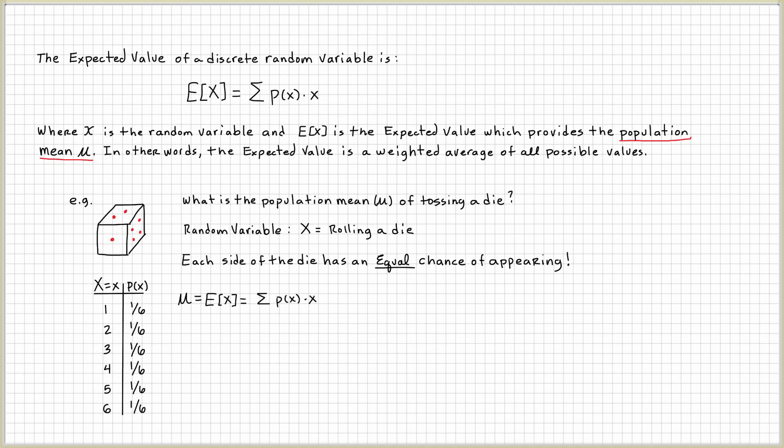So here, what we're going to do is we're going to sum the probabilities times the outcomes. So we're going to take our first outcome, 1, times the probability, 1 over 6, take the outcome of 2 times 1 over 6, take the outcome of 3 times 1 over 6, and so forth.